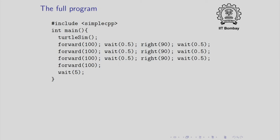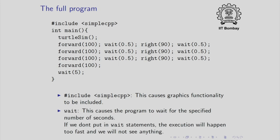The full program that I am going to show you running is actually slightly different. The first line here says include simplecpp. This just includes a header file called simplecpp. Then you have the main program, the first line of which is turtle sim. This creates the graphics window or what we call the graphics canvas with the turtle inside it. Now the rest of the program is really similar to what I wrote. So I have forward and right.